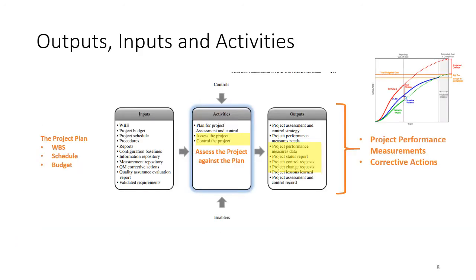The inputs to the process are the work breakdown structure, the schedule, and the budget. Using that information, you assess the project against the plan and generate project performance measurements — as shown with the earned value chart. When things are not going according to plan, you take corrective actions.